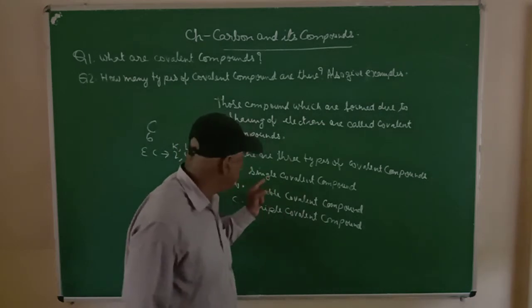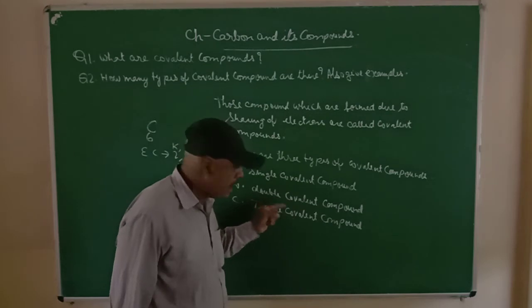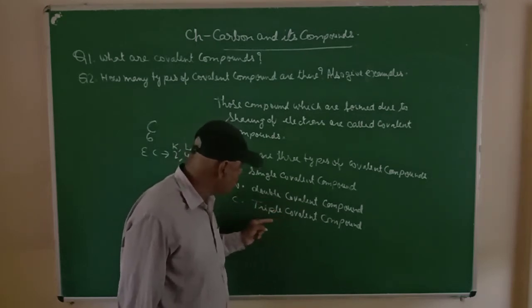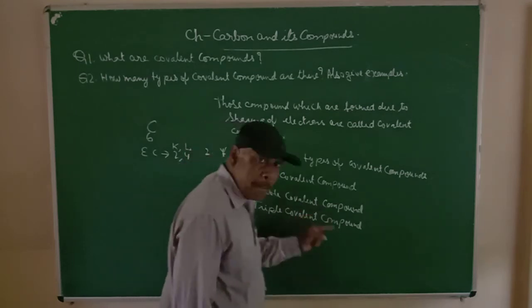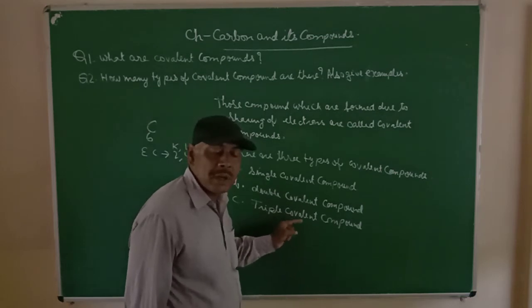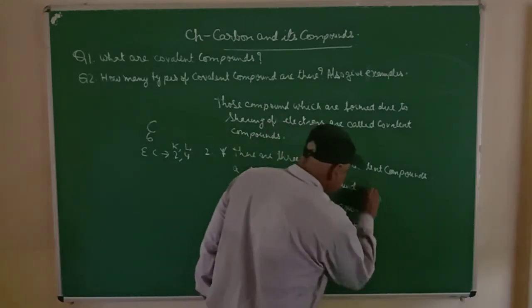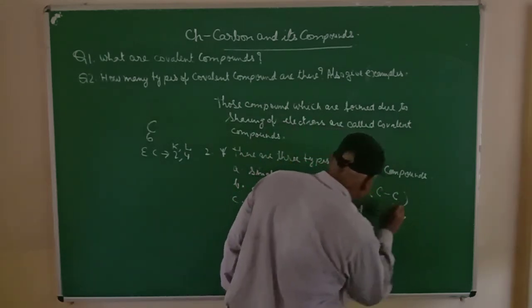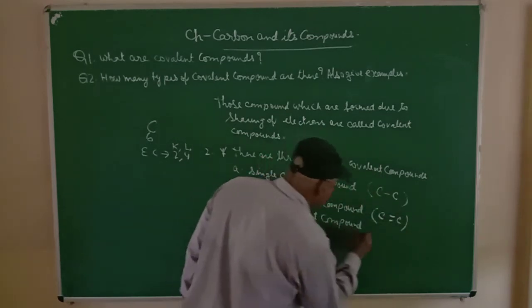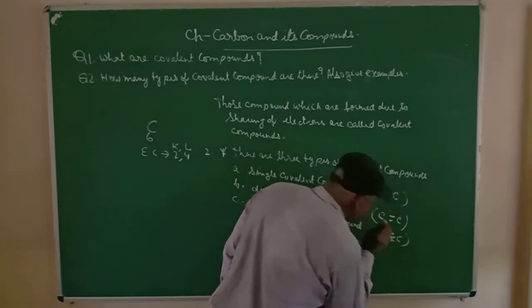In a single covalent compound, the bond between carbon-carbon is a single bond. In a double covalent compound, the bond between carbon-carbon is a double bond. And in a triple covalent compound — that is called a triple covalent bond — carbon and carbon are sharing three electrons each, giving a carbon-carbon triple bond.